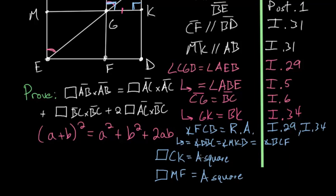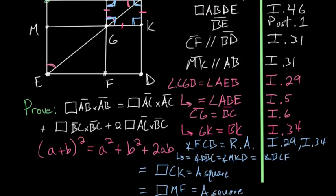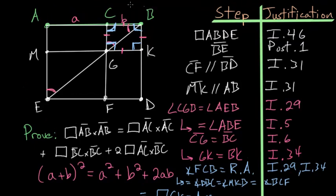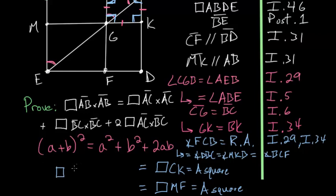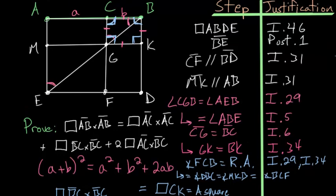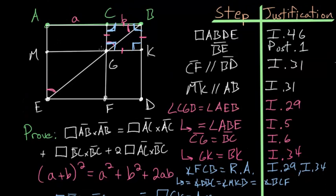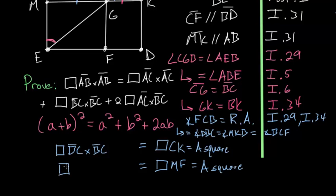Now that we've proven that each of these figures are squares, let's take a closer look at the lines that contain them. Square CK is contained by line BC, so it's the square on BC. For square MF, since AC and MG are equal as opposite sides of a parallelogram, square MF is contained by lines AC and AC — so it's the square on AC.